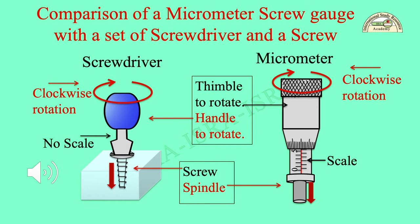Comparison of a micrometer screw gauge with a set of screwdriver and screw: when the screwdriver is in clockwise rotation as shown in the diagram, the screw moves into the wood. Similarly, when the thimble is in clockwise rotation, the spindle moves out from the sleeve. Therefore, the working principle is the same.